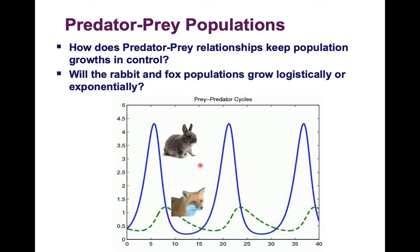To answer the next question: will the rabbit and fox populations grow logistically or exponentially? You might see a J-curve initially, but then they fluctuate around their steady state, drop, and go back up. This is logistic, balanced growth — because they are not growing exponentially out of control. Both populations are growing logistically.